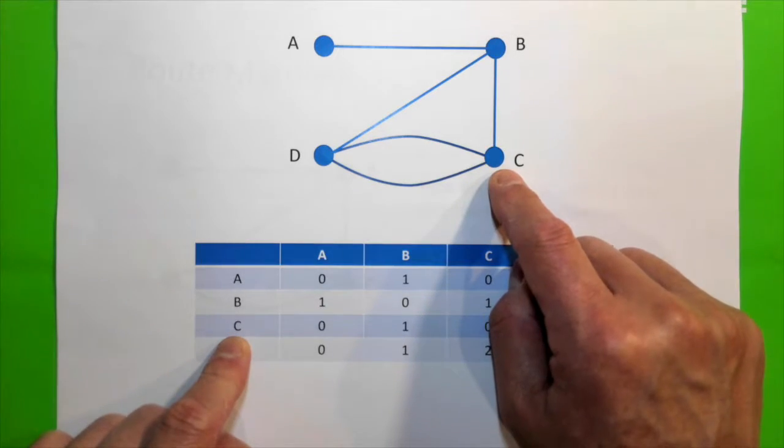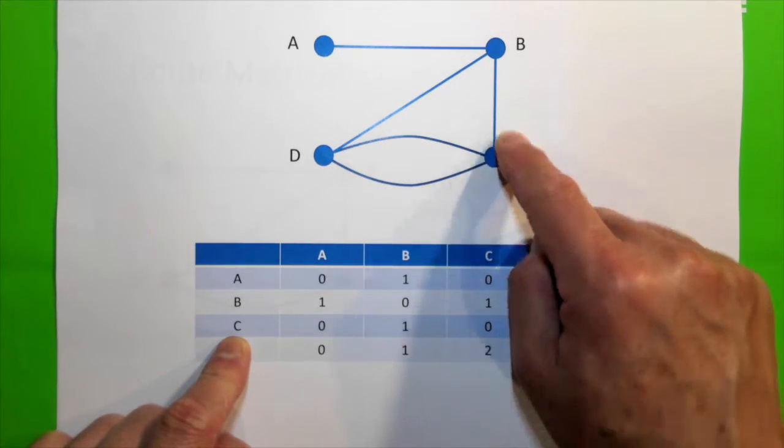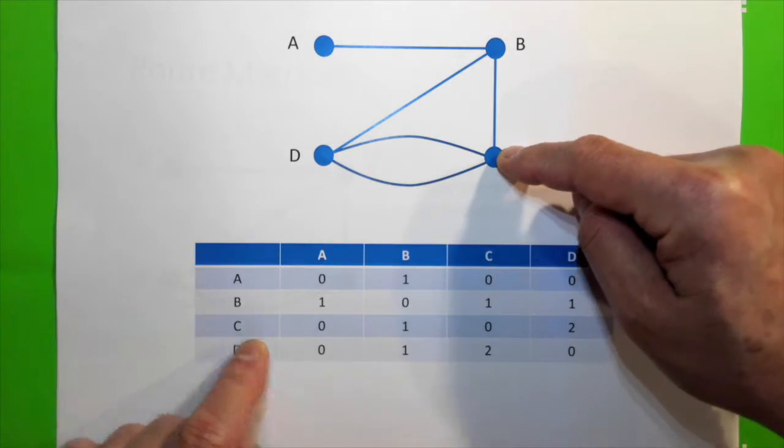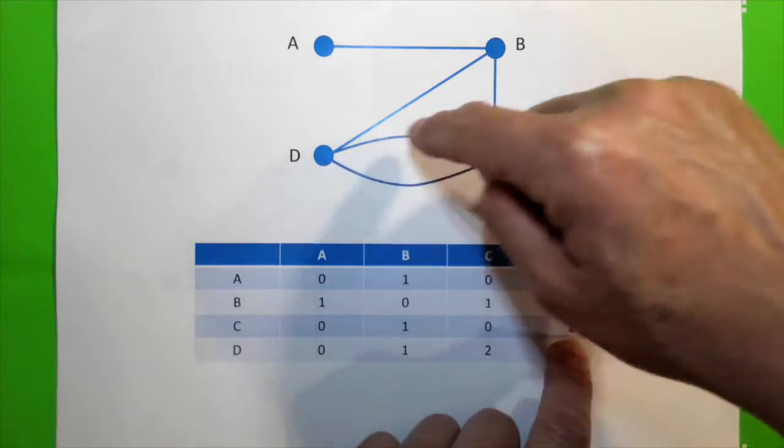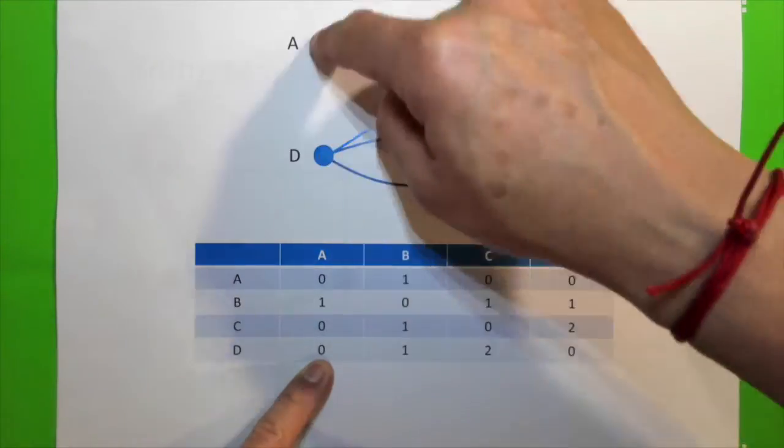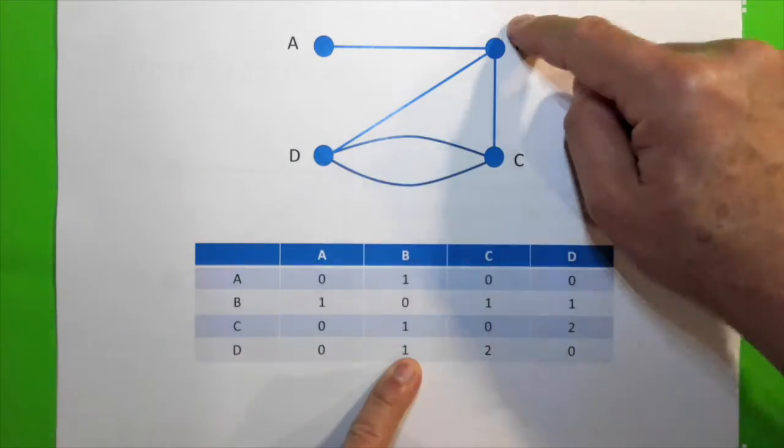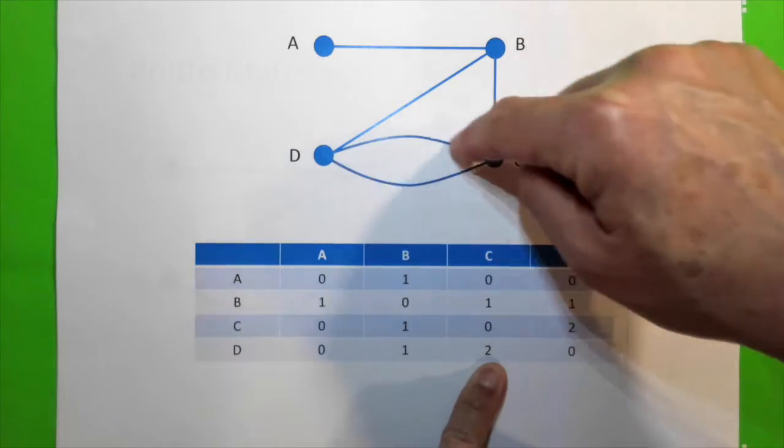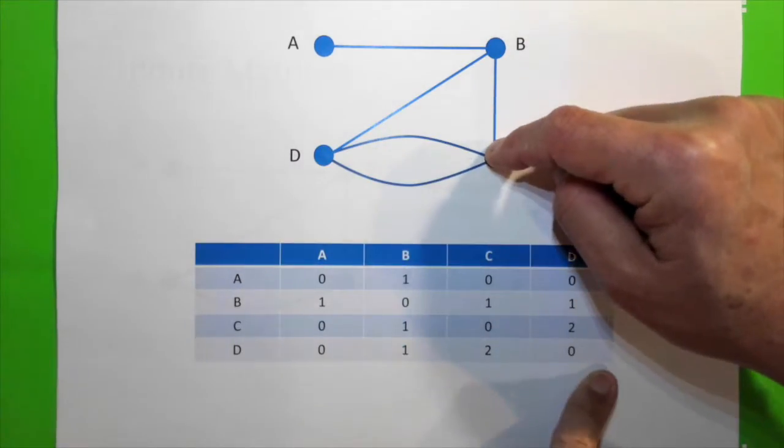C to A, no direct route. C to B, one way. C to C, none. C to D, here or here. What about D? D to A, there's no direct route. D to B, one way. D to C, that way or that way. D to D, none.